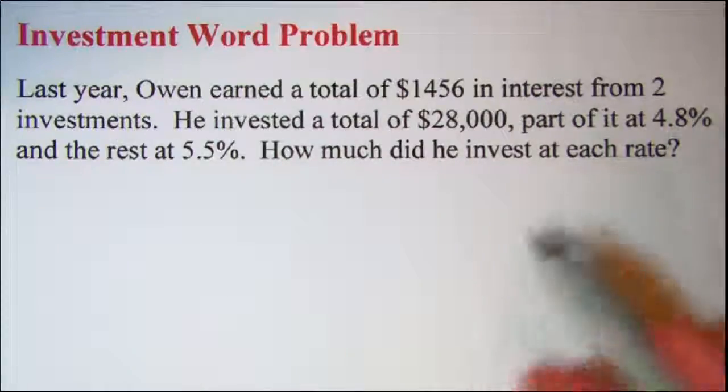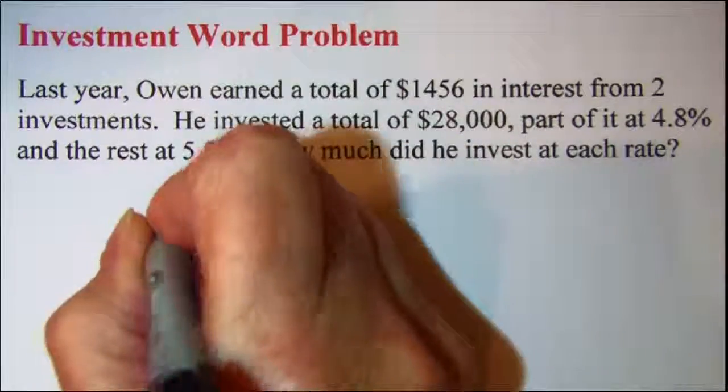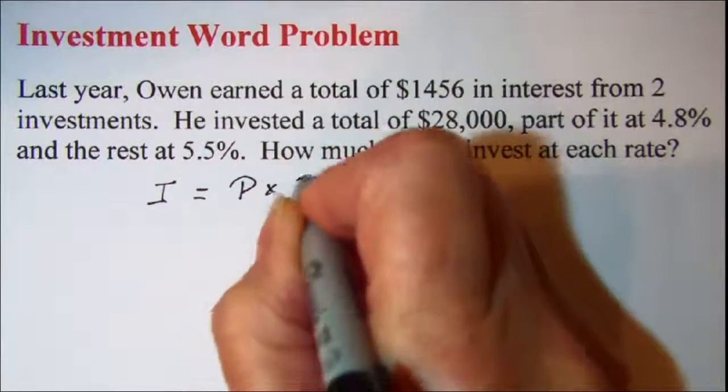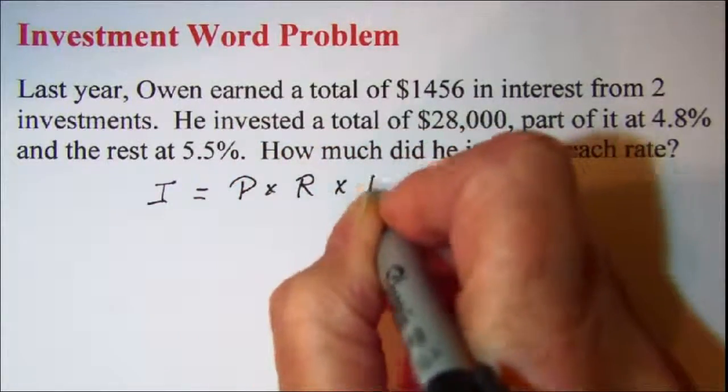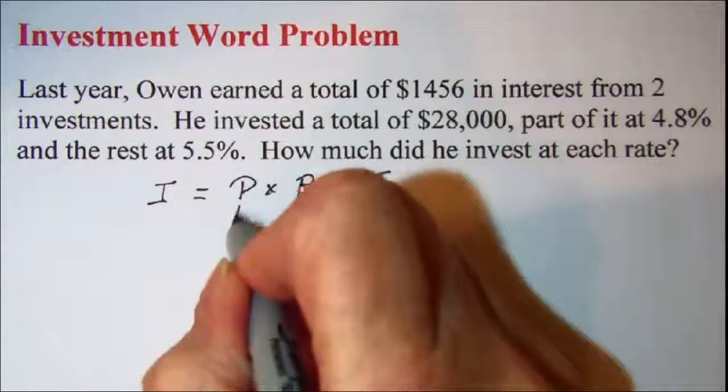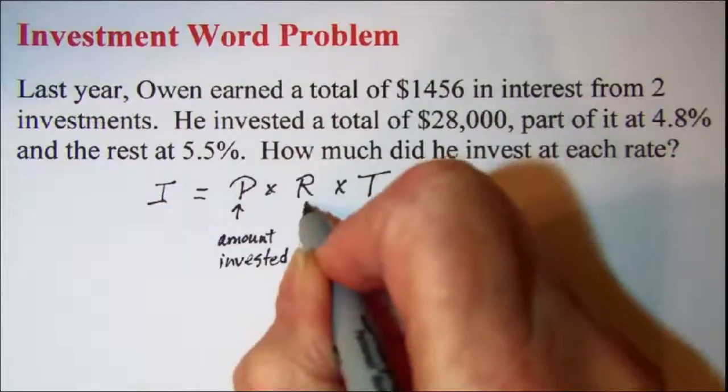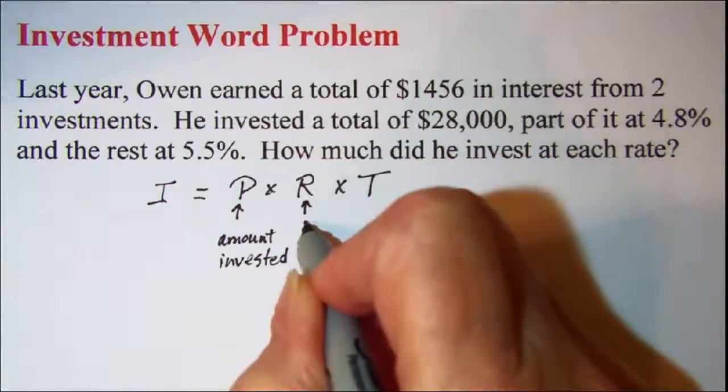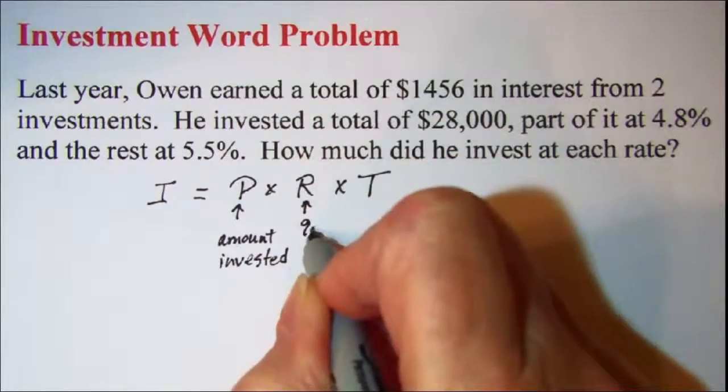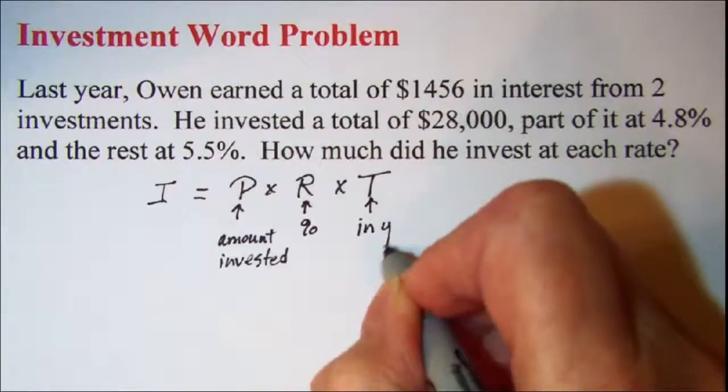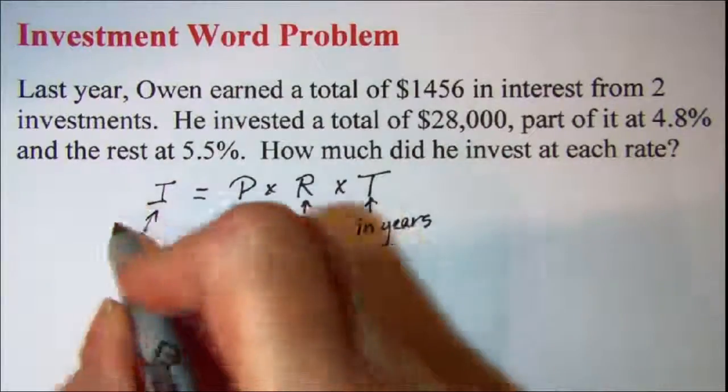To relate all this information we'll be using interest equals principal times rate times time. The principal is the amount invested. The rate is the interest rate or percent. And the time needs to be in years. And this is interest earned.